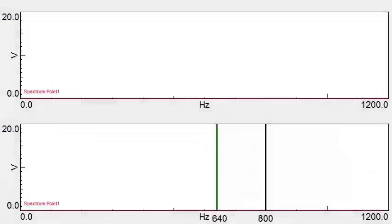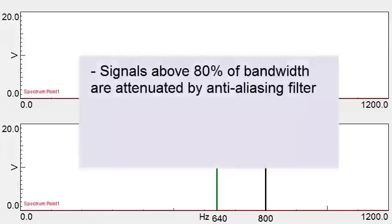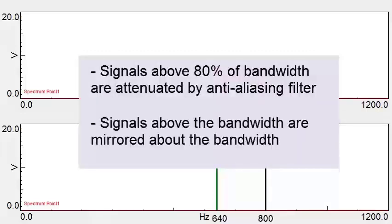This video will demonstrate a few important aspects of aliasing. You'll be able to see how signals are attenuated by the anti-aliasing filter, and also how incoming signals that are above the specified bandwidth get mirrored about the bandwidth.